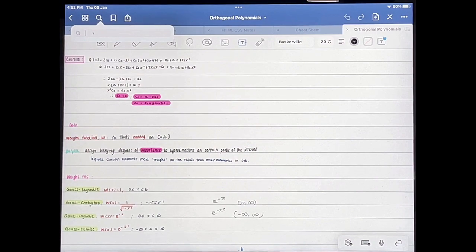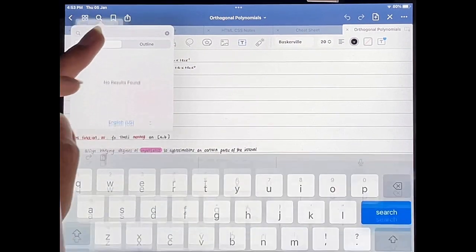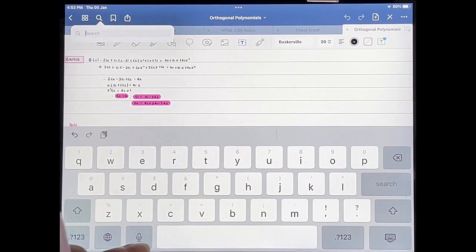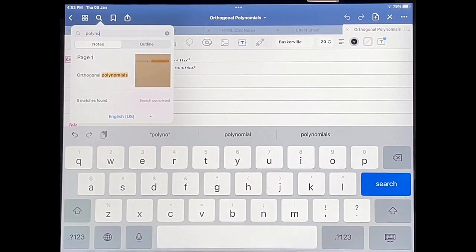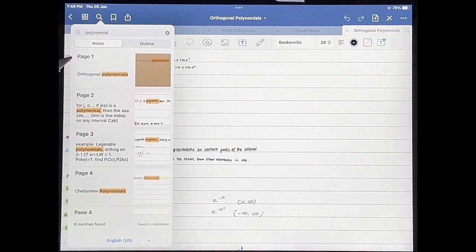So if you tap on that then you can basically search whatever you want. So I'm just going to search for, let's see, polynomial.